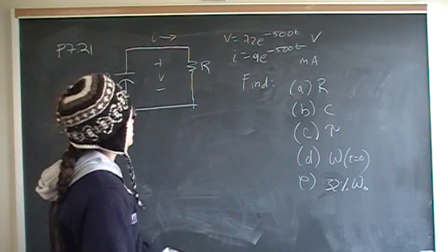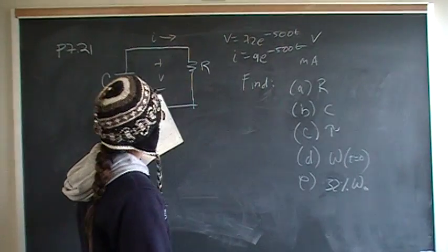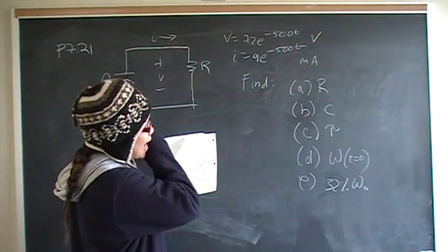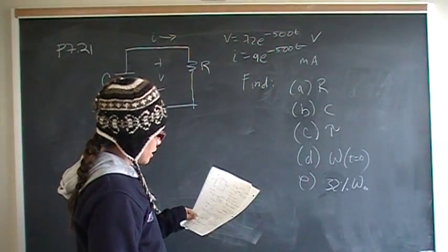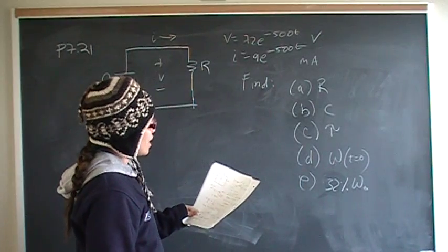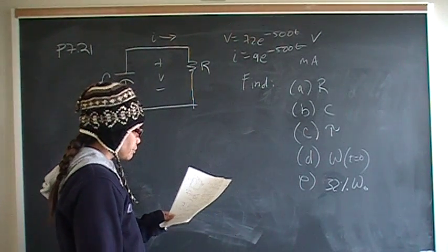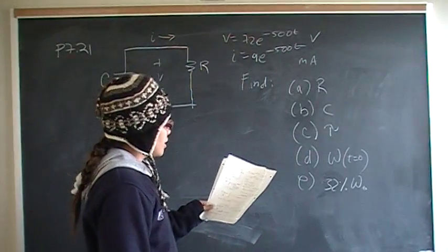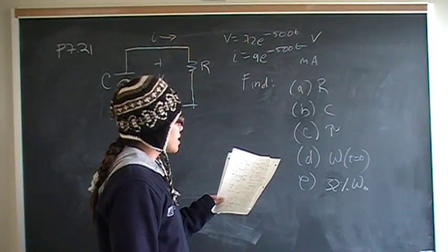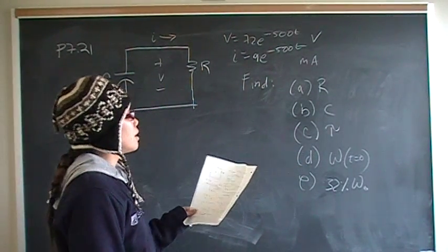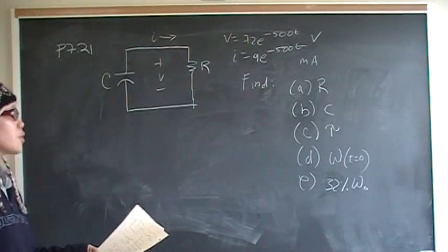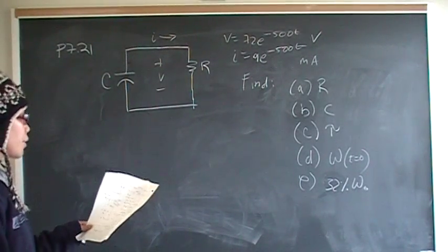We're looking for the value of the resistor, the value of the capacitor, tau in milliseconds, the initial energy stored in the capacitor, the time that it will take for 68% of the initial energy stored in the capacitor to dissipate, and that will be in microseconds.